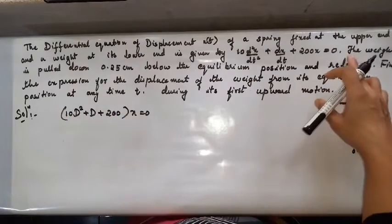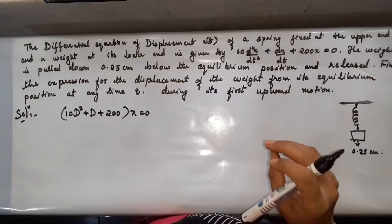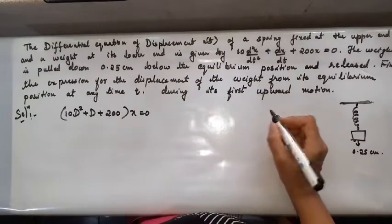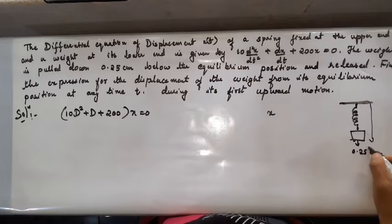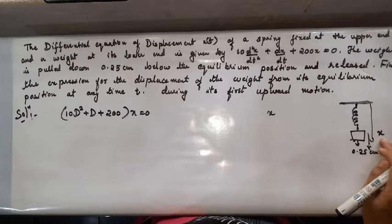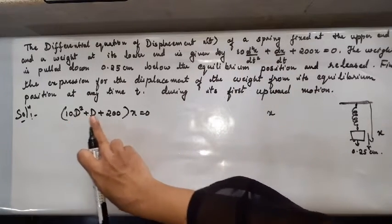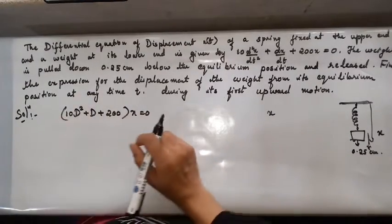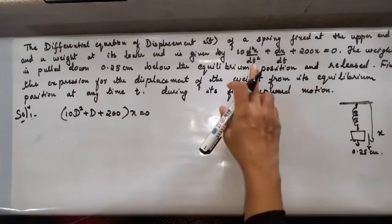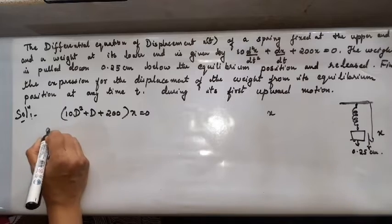The weight is pulled down 0.25 centimeters below the equilibrium position and released. Find the expression for the displacement at any time t. The displacement is called x here. The given equation can be written as (10D² + D + 200)x = 0. This is a homogeneous linear differential equation because the right-hand side is 0 with no function of t.